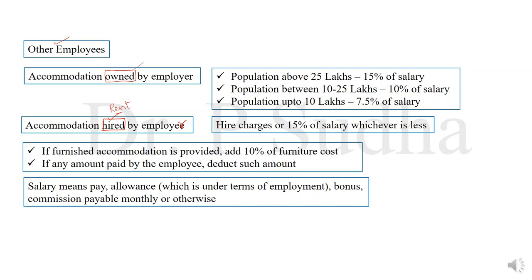If the employer is the owner of the house, then look at the population. If the population is above 25 lakhs, then 15% of salary will be the value of rent-free accommodation. If the population is between 10 to 25 lakhs, it is 10% of salary. If the population is less than 10 lakhs, it is 7.5% of salary. On the other hand, if the employer has rented the property, then higher of rent paid or 15% of salary, whichever is less.